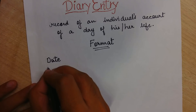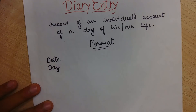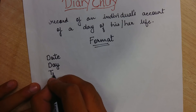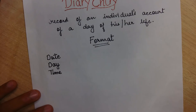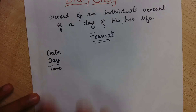After that, without leaving a line, you have to write the day — the day of the week, whether it is Monday, Tuesday, and so on. Under that you have to write the time. You are writing at which time in the diary. Generally you have to write the time as evening, because you write the record of your whole day in the evening — evening and night.